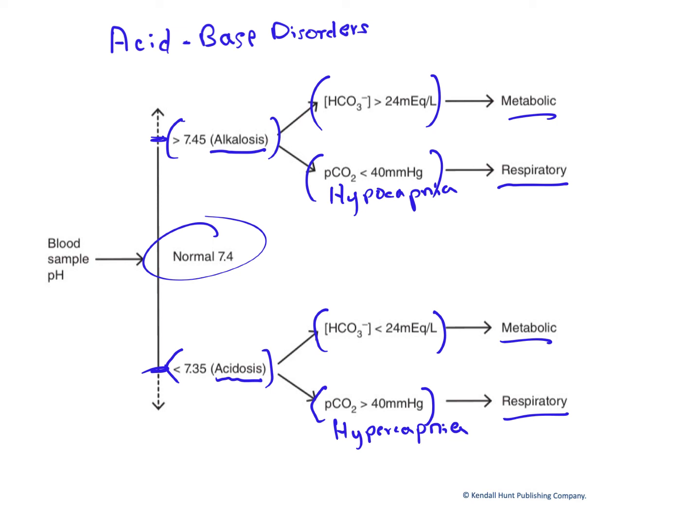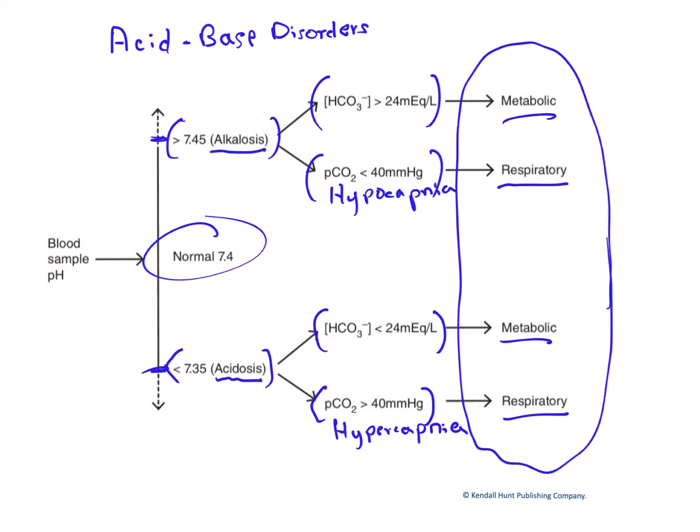So as you can see, we have four primary acid-base disorders: two forms of acidosis — respiratory and metabolic — and two forms of alkalosis — respiratory and metabolic. One more point: is it possible for someone to have acidosis or alkalosis because of some sort of combination of respiratory and metabolic abnormalities? Absolutely. Those disorders are called mixed acid-base disorders. They're a little bit harder to comprehend and beyond the scope of this book, but they do occur.